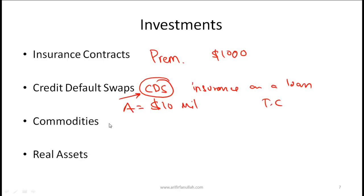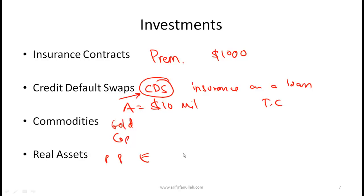Commodities have also become very popular investments, including metals such as gold and copper, as well as agricultural products. Commodities generally have a relatively low correlation with traditional investments and hence add a nice diversification benefit to most portfolios. Real assets — property, plant, equipment and so on — are examples of putting your money in a tangible asset that you can touch and feel.